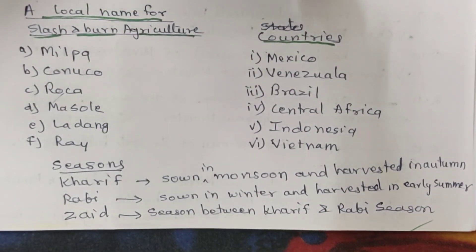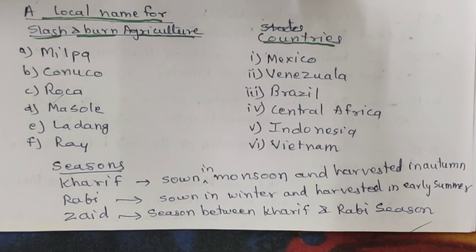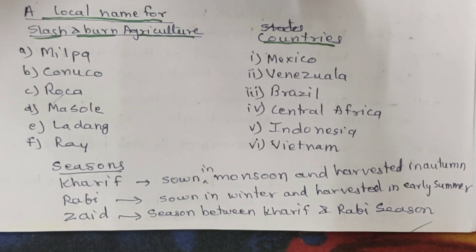Local names for slash and burn agriculture by country: Milpa - Mexico; Conuco - Venezuela; Roca - Brazil; Masole - Central Africa; Ladang - Indonesia; Ray - Vietnam.